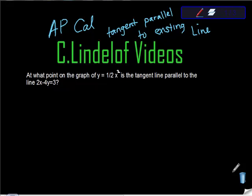This is just one of the possibilities. This came right off one of the old multiple choice exams and it says at what point on the graph of y equals one half x squared is the tangent line parallel to the line 2x minus 4y equals 3.